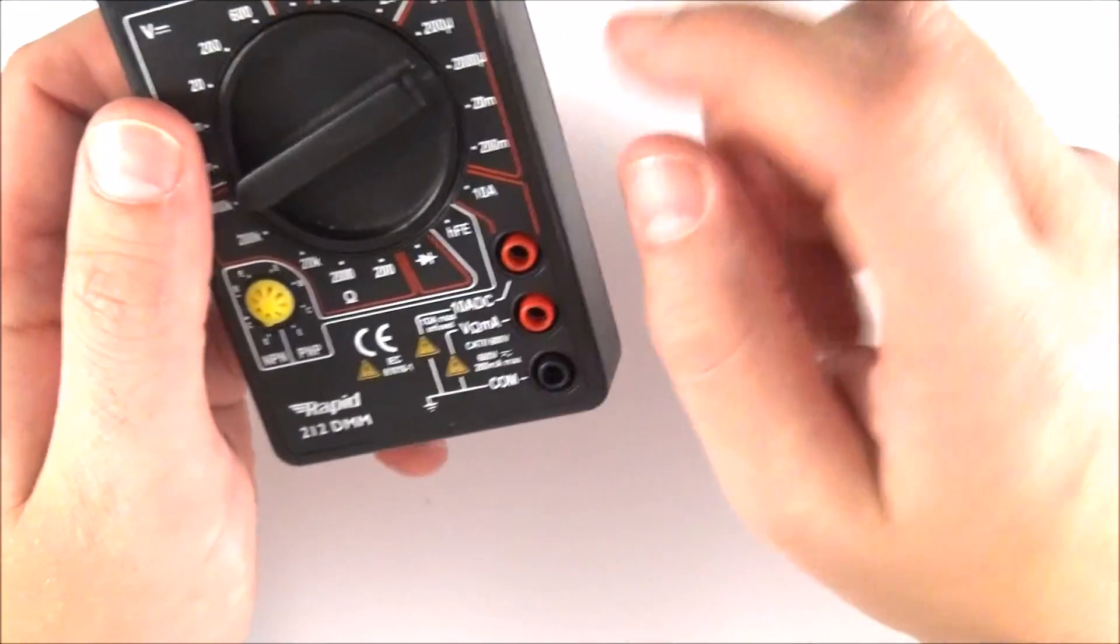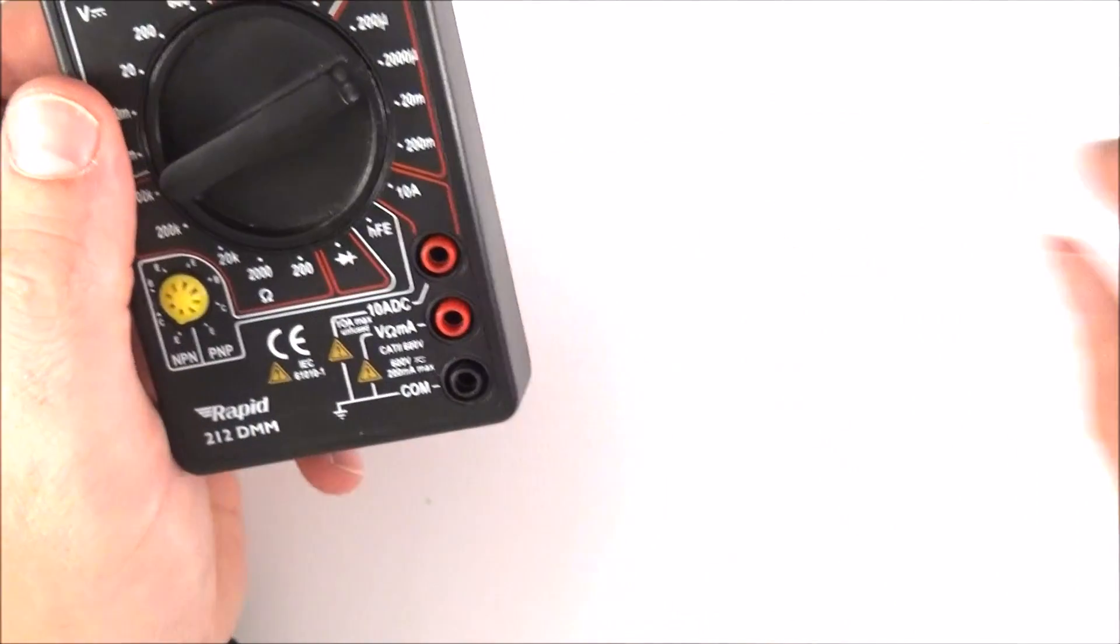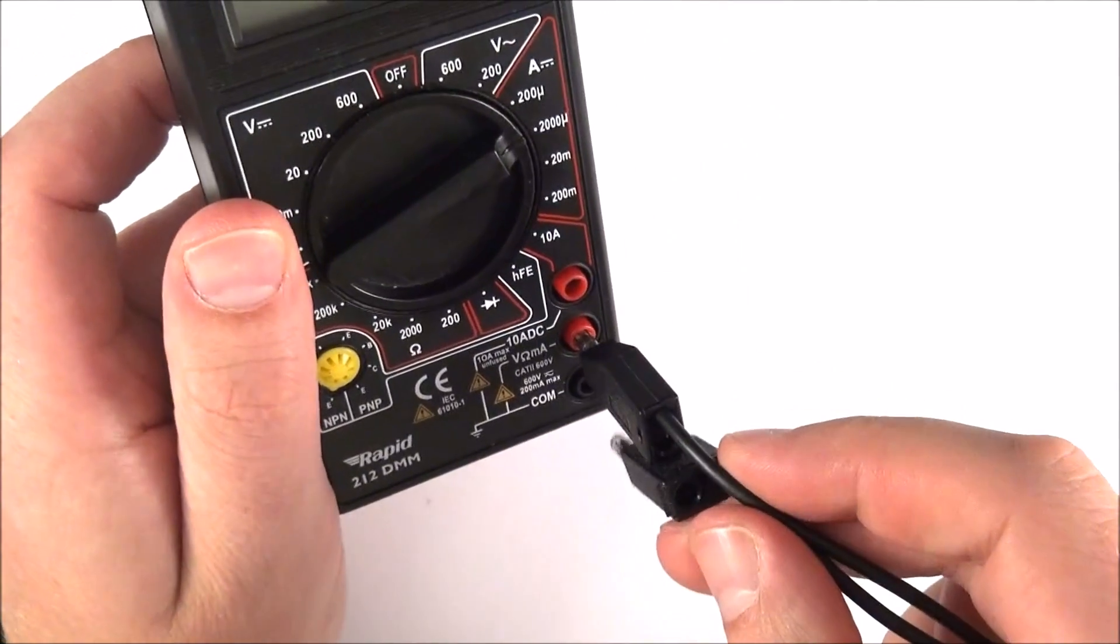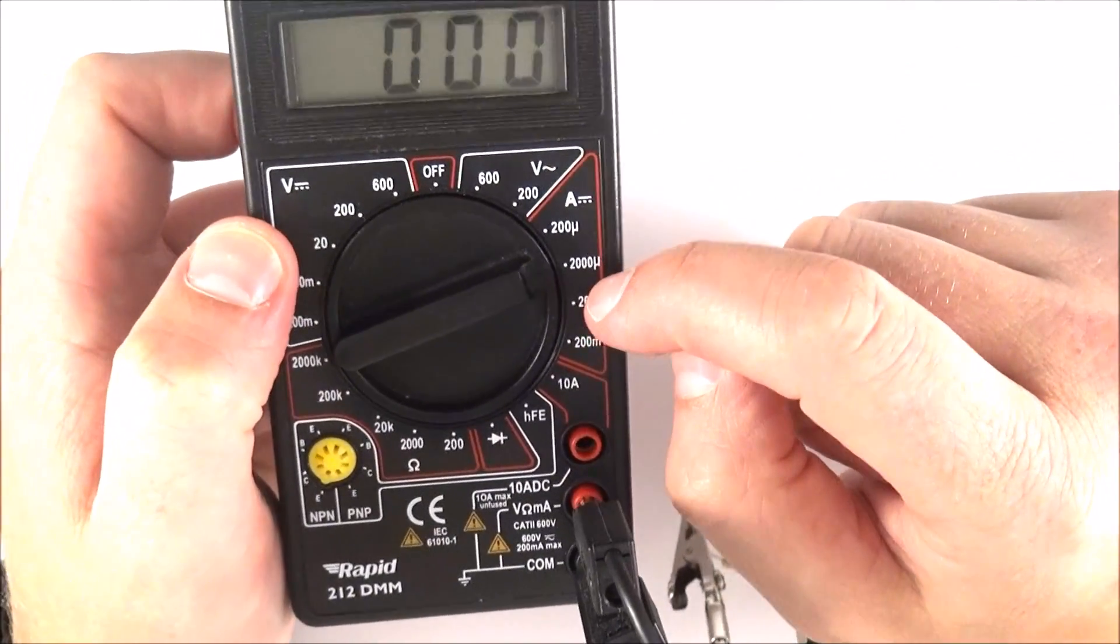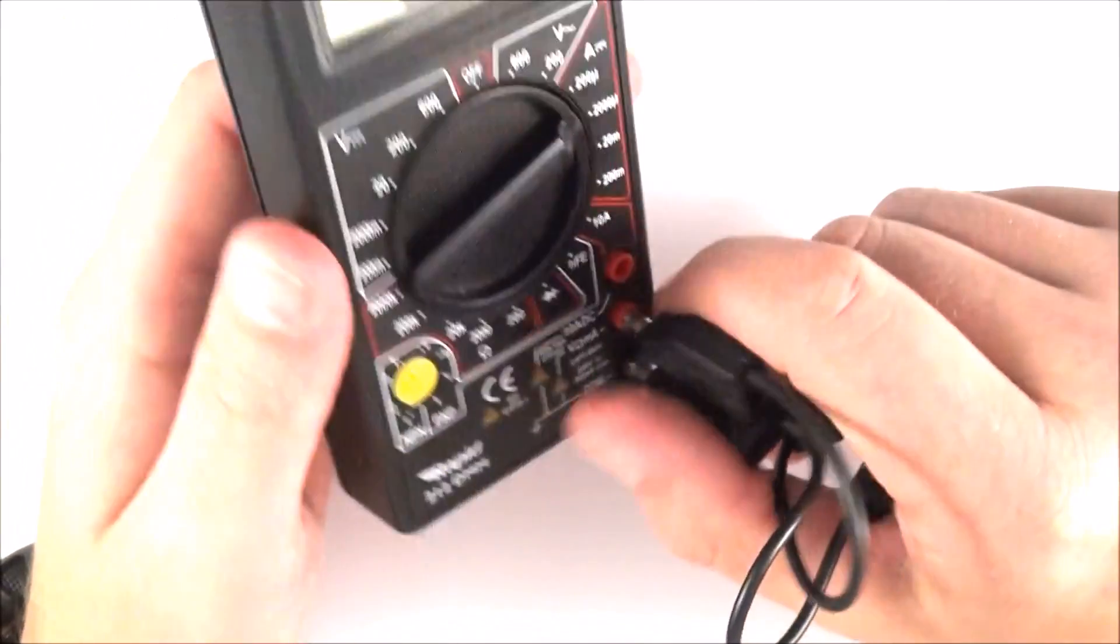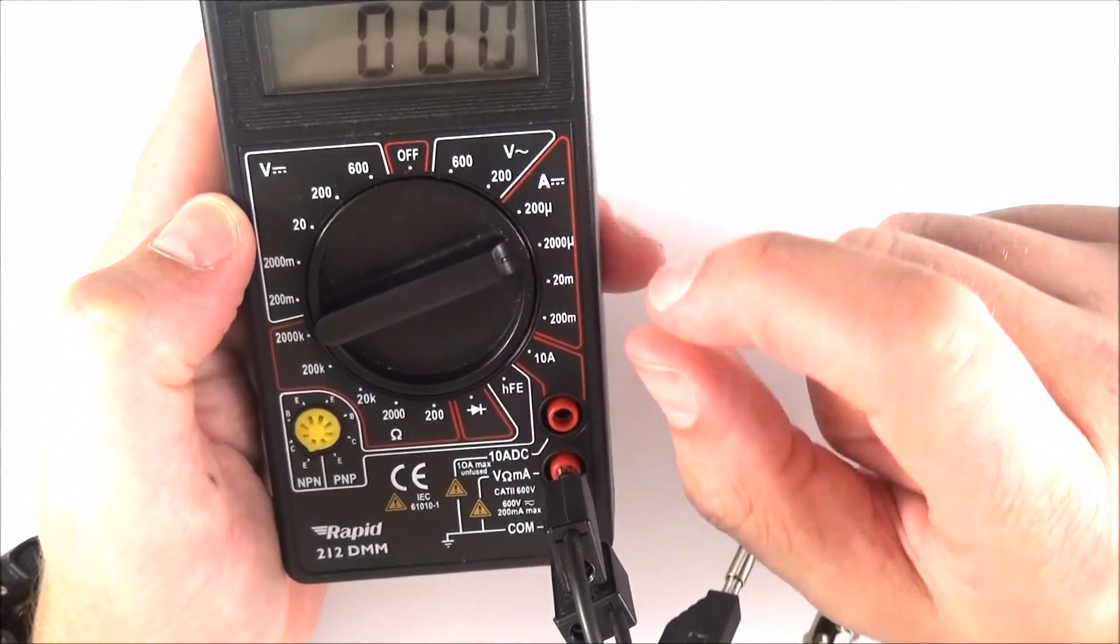This range up here going up to about 200 milliamps, you need to connect your leads if you're going to be using it to the bottom two holes. And these ones here are fused, which means if you've got too high a current that you're trying to measure with this, it will blow the fuse in the back of this device. So it is something to kind of pay attention to.